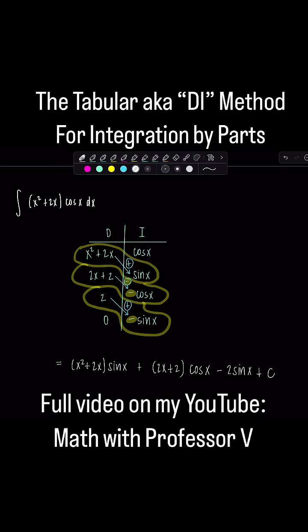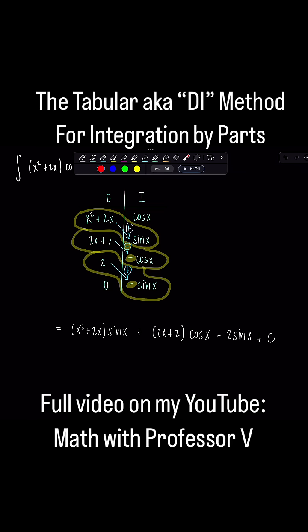Okay, you know the back of the book left it like this, and I said shame on them. I don't like it. Because see how this term involves sine x, this involves cosine, and this also involves sine x?